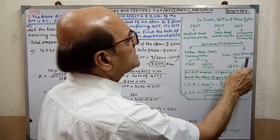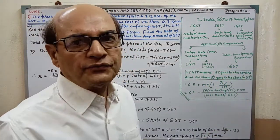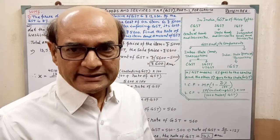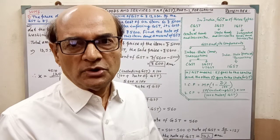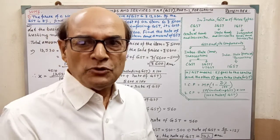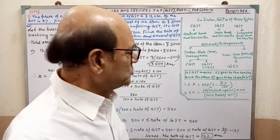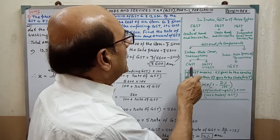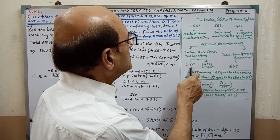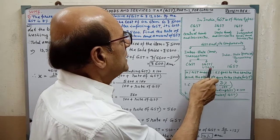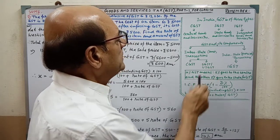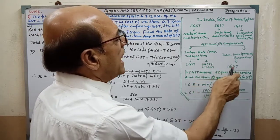Interstate transaction is outside of the state, like West Bengal to UP, UP to Bihar, to another state. We may divide into two parts: CGST and SGST or UTGST, that is Union Territory, and IGST.